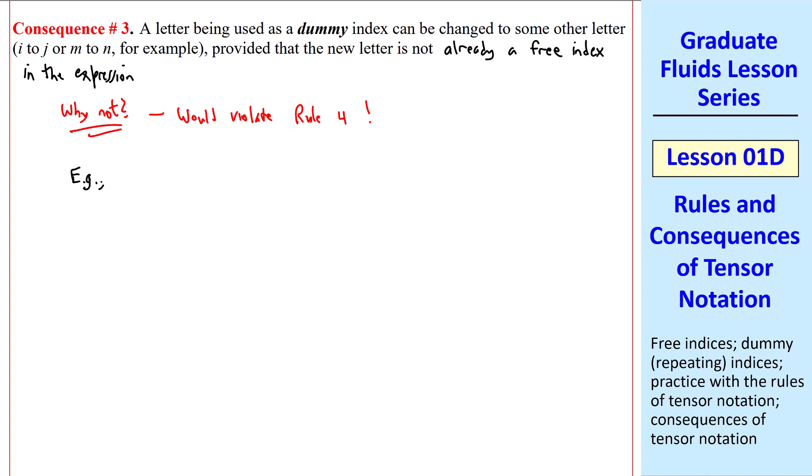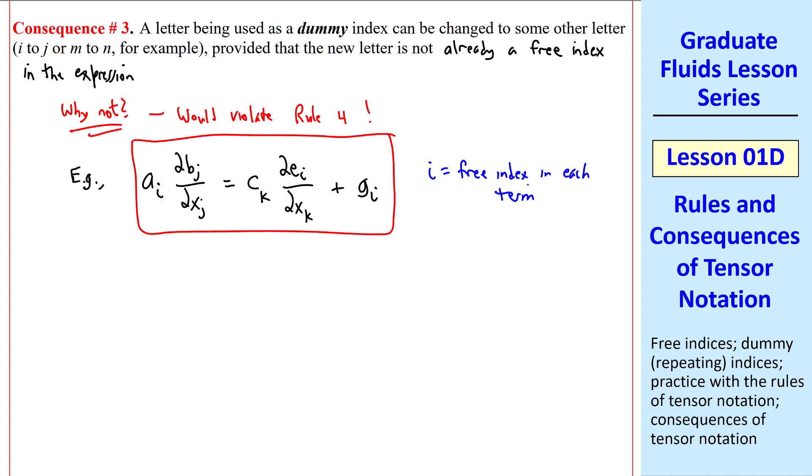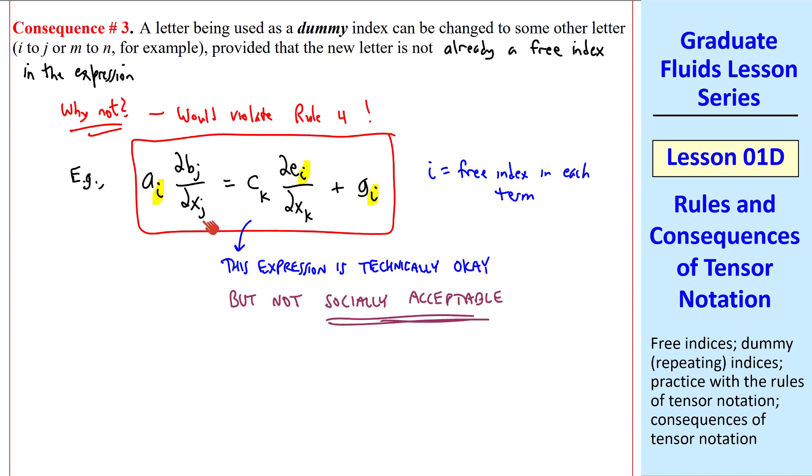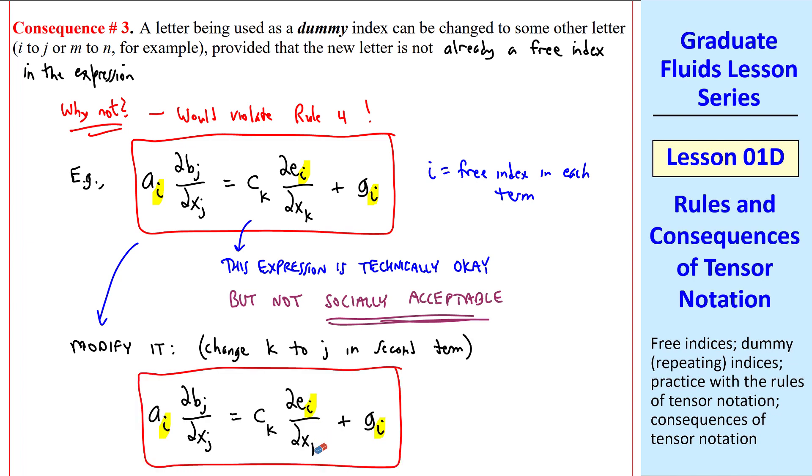For example, suppose you're doing some algebra, and you end up with this expression. We see that i is a free index in each term, but in this term j is the repeated variable, and in this term k is the repeated variable. This term has no repeated variables. This is a vector expression, since there's one free index in each term. This expression is therefore technically okay, but I like to say that it's not socially acceptable. I would never give this equation in a journal article, for example. We can modify it to make it more socially acceptable, namely change the k's to j in this second term. Again, I copied and pasted, and I'm simply going to change those k's to j's. This one is not only technically correct, it's also socially acceptable, which should make you happy.